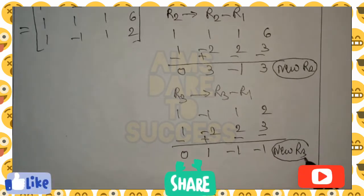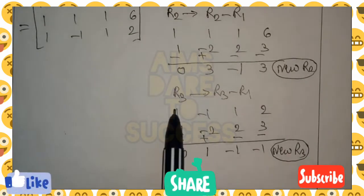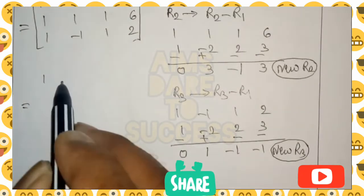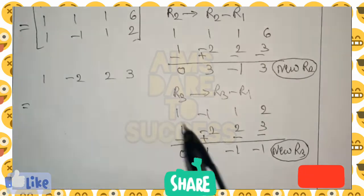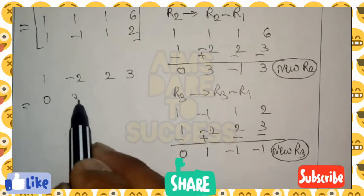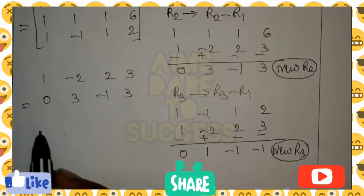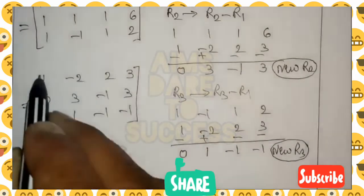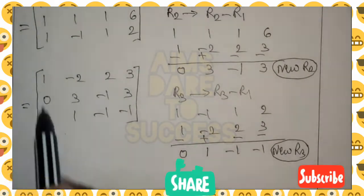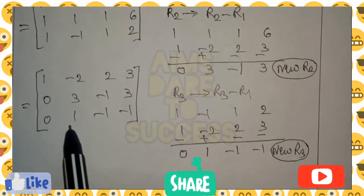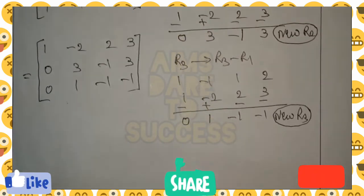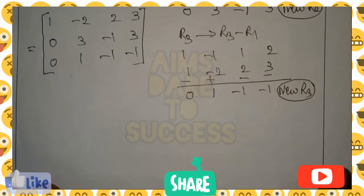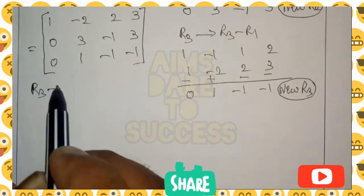After getting new R2 and new R3, the first row remains the same: 1, minus 2, 2, 3. New R2 is: 0, 3, minus 1, 3. New R3 is: 0, 1, minus 1, minus 1. We just got the first column as 1, 0, 0. Next step: the third row, second element should become 0 by using row 2. To get 0, we should multiply row 3 by 3, because row 2's second element is 3.